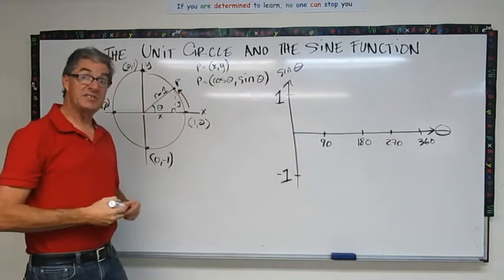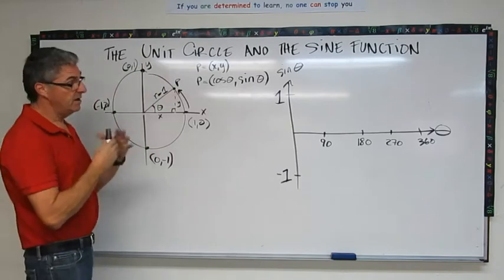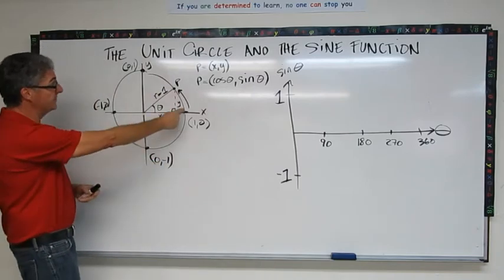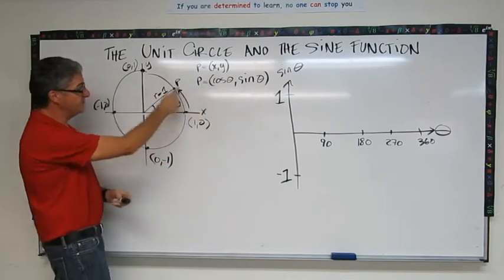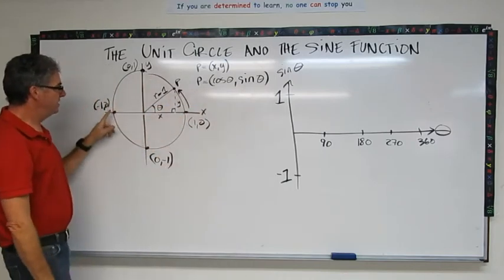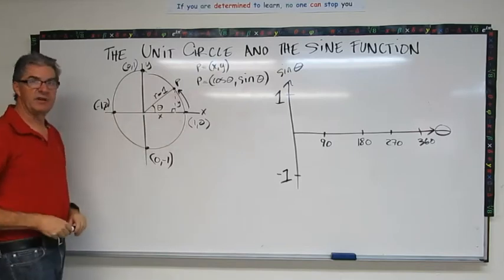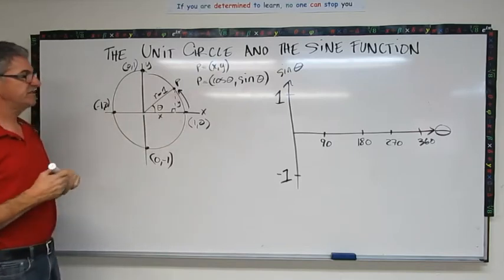180 is halfway and then 90 is halfway between those two. This is 270. So now I've scaled my axes so they're going to let us measure the value of sine theta, that's the Y value here as we progress through 0 degrees, 90, 180, 270, and back to 3, all the way to 360.